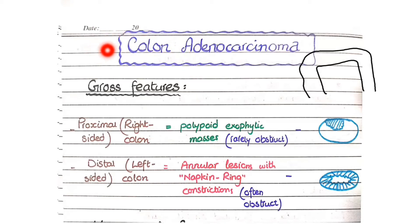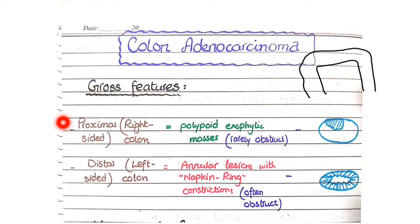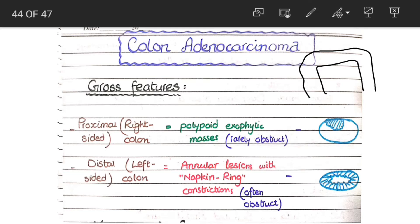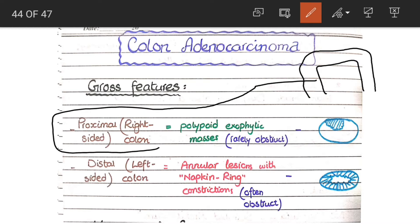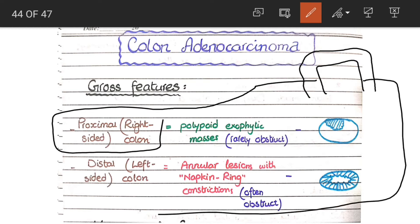In this video we will discuss the pathological features of colonic adenocarcinoma. Let's start with the gross features. The gross features depend on whether the tumor is on the right side of the colon or on the left side of the colon. The right side of the colon is also called the proximal side, and the left side is also known as the distal side.